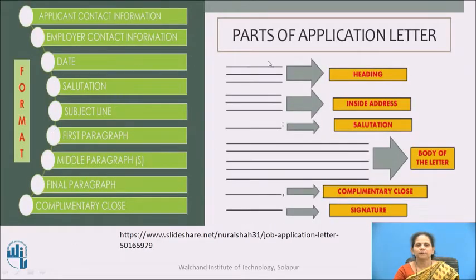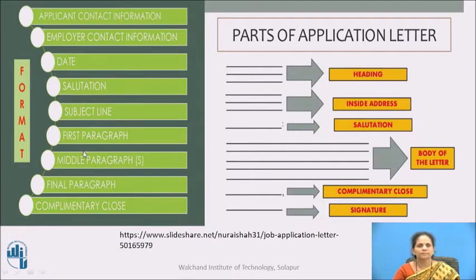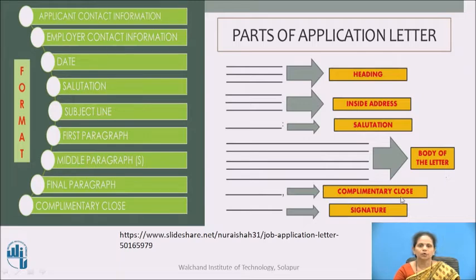Here are some of the parts of the application letter. We have already discussed the format of writing a cover letter. The parts include: applicant contact information, employer contact information, date line, salutation, subject line, first paragraph, middle paragraph, final paragraph, and complementary close. The diagram also emphasizes the format: headline, inside address, salutation, body of the letter, complementary close, and signature. These two diagrams show the format of writing a job application.